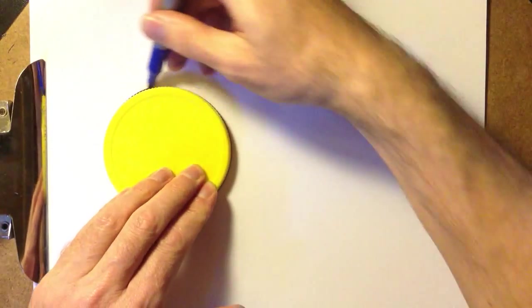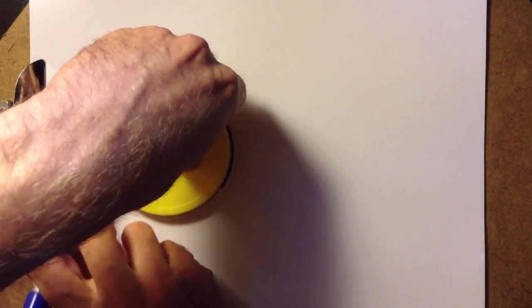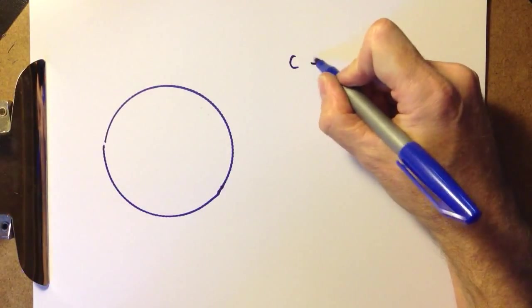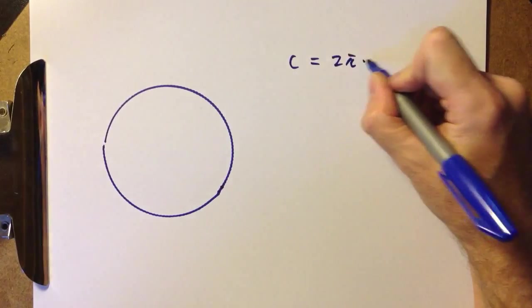This may be our circle. Like any circle, it has a circumference, and the circumference is given by c equals 2π times the radius.